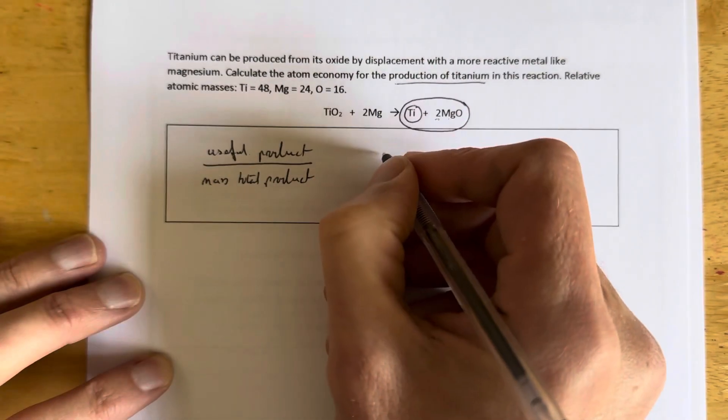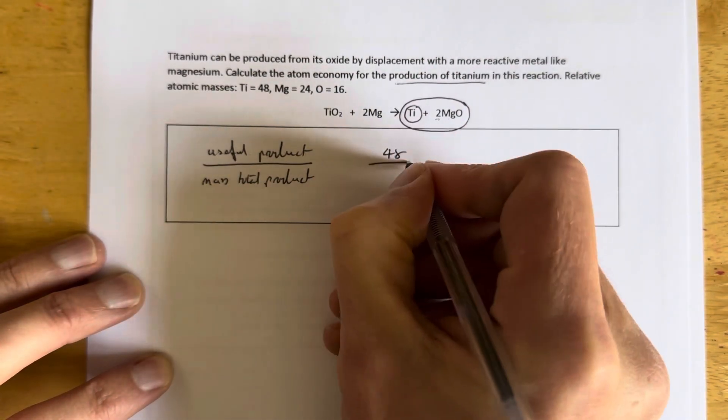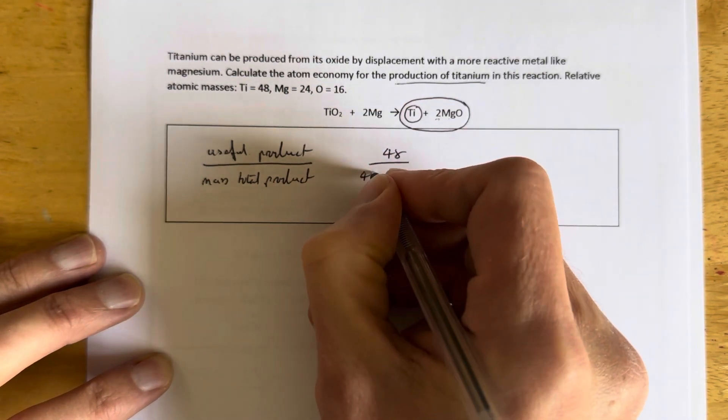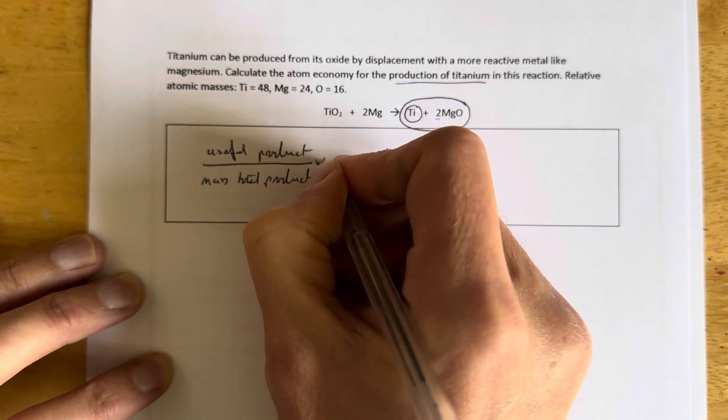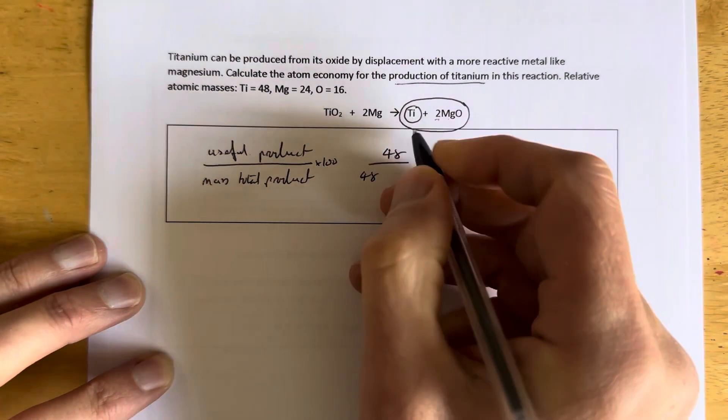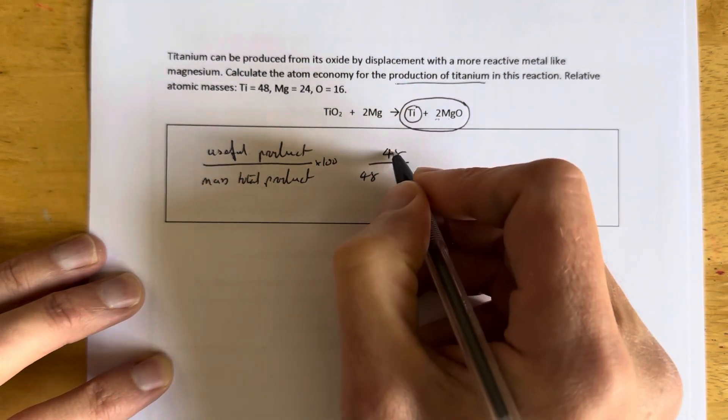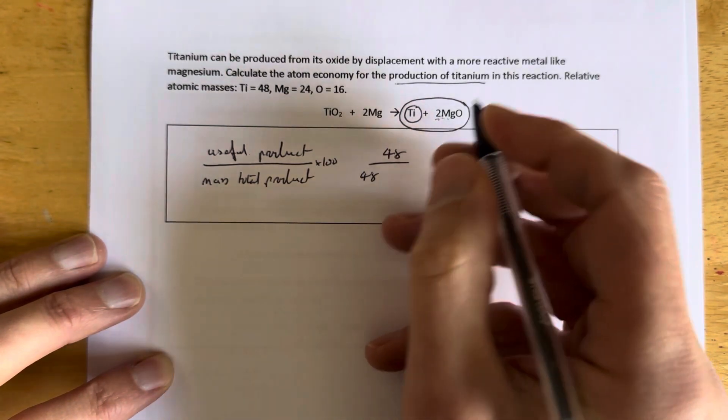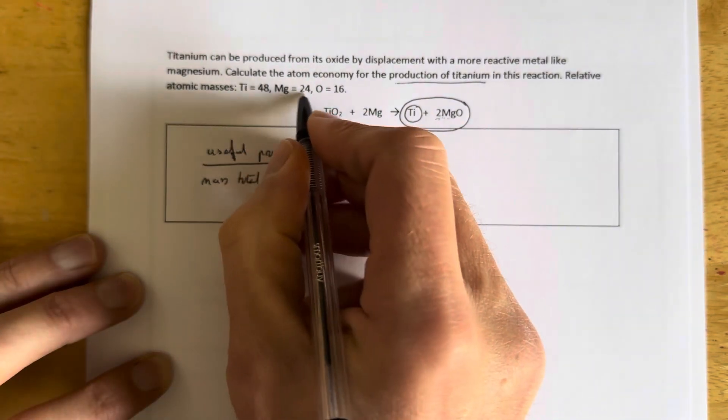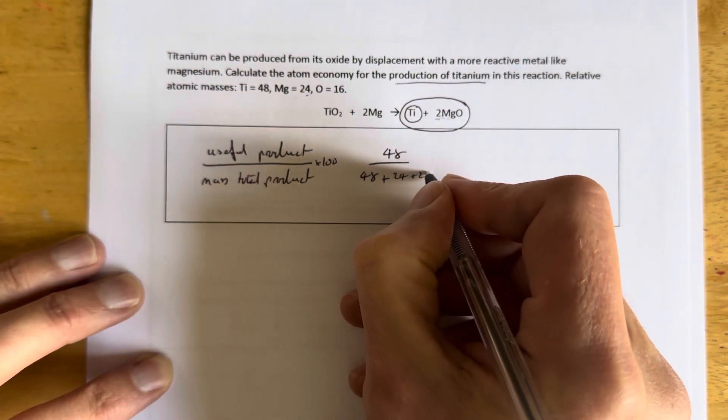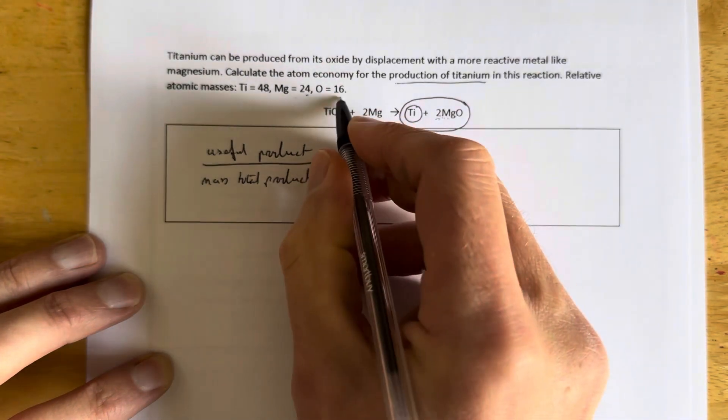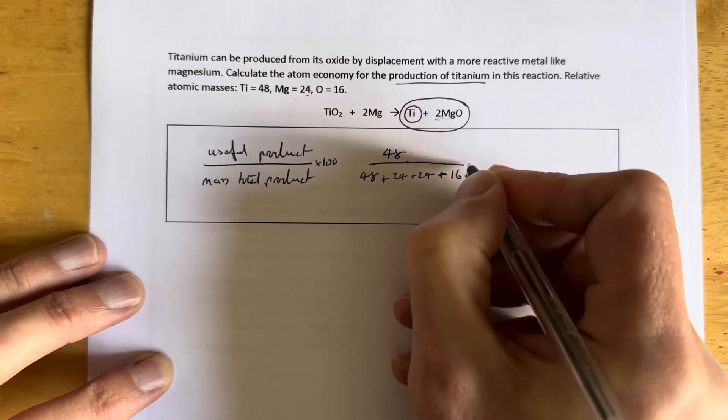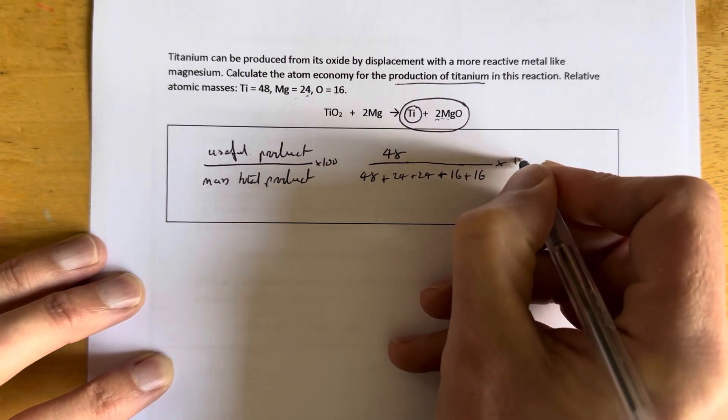Titanium to start with is 48. 48 is our titanium. That's the useful product. It's also part of the total product so it's going to go on the bottom down here. This is a percentage calculation so we need to multiply by 100 as well. So we've got our titanium on top and the bottom. Now we need our magnesium oxide. We've got two magnesiums and two oxygens in this equation. So magnesium is 24, plus 24 plus 24. Two magnesiums and two oxygens. Oxygen is 16, plus 16 plus 16 and then we need to multiply all that by 100.